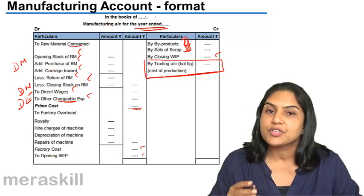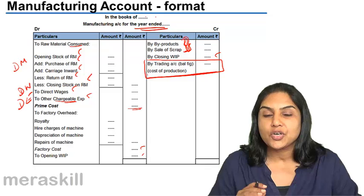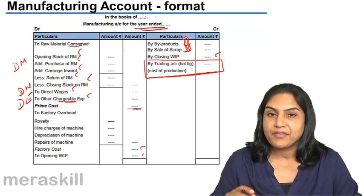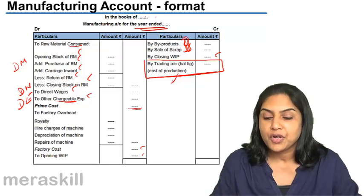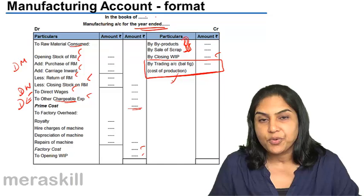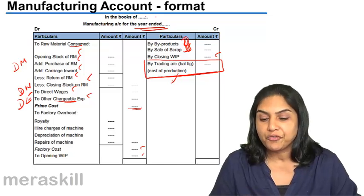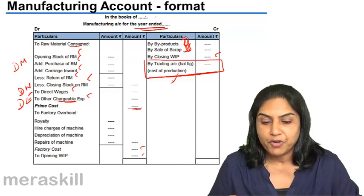The trading account is prepared as before. Where you have opening stock of finished goods. You have, instead of cost now, this cost of production which has been transferred. On the credit side, you have the sales and the closing stock of finished goods. And we get a trading account with a gross profit.